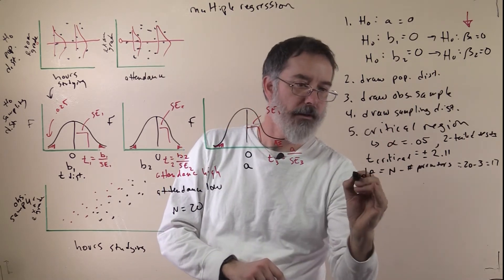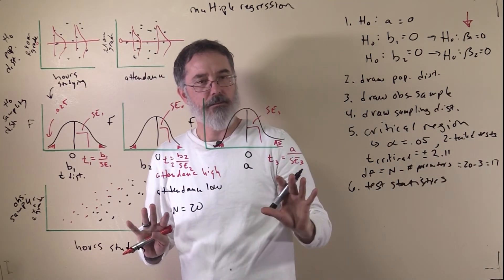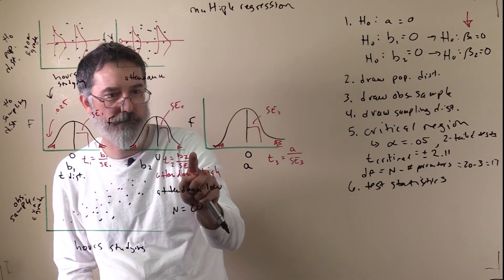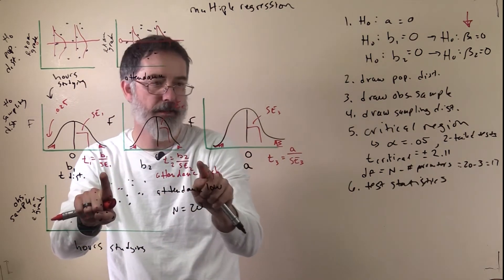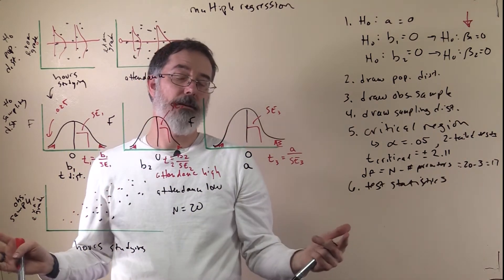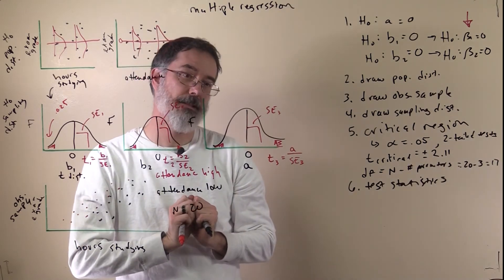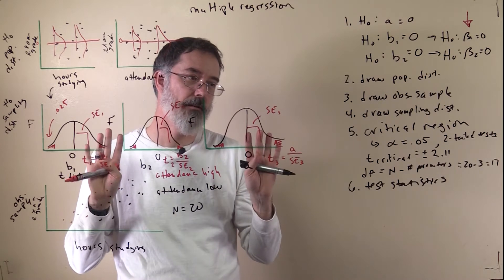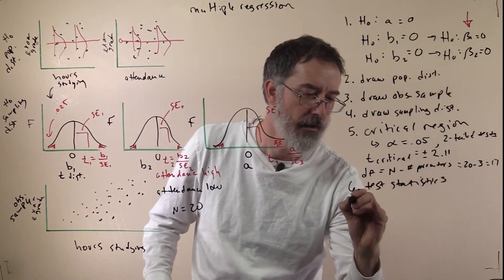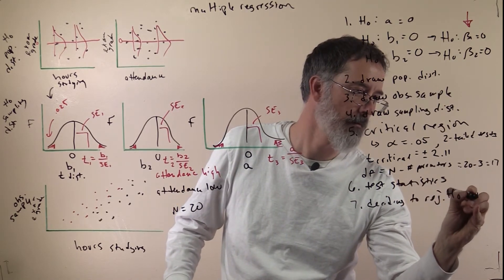Next we calculate our test statistics. SPSS will tell you your slopes and your intercept, and it will tell you the standard error, so you can calculate your t-statistic that way. But SPSS will actually just tell you the t-statistic directly, so you do not even need to calculate it. The actual calculations to determine all of these things are quite complicated — they use matrix algebra, which is beyond the scope of this class.